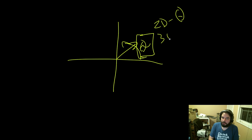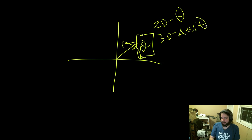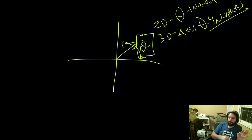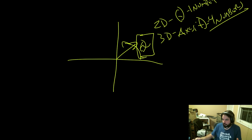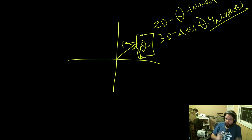In 2D you need just theta. In 3D you need an axis and a theta. A 3D axis plus a theta — this is represented with one number in 2D, and represented with four numbers in 3D.